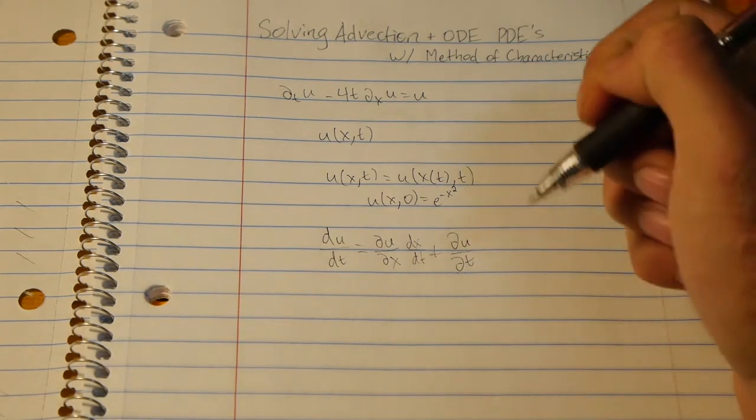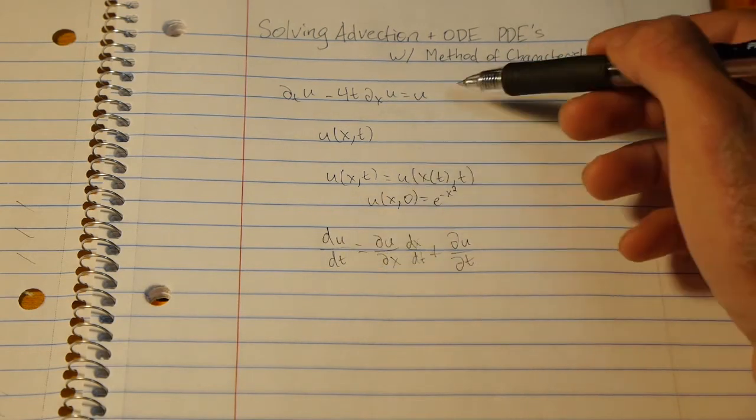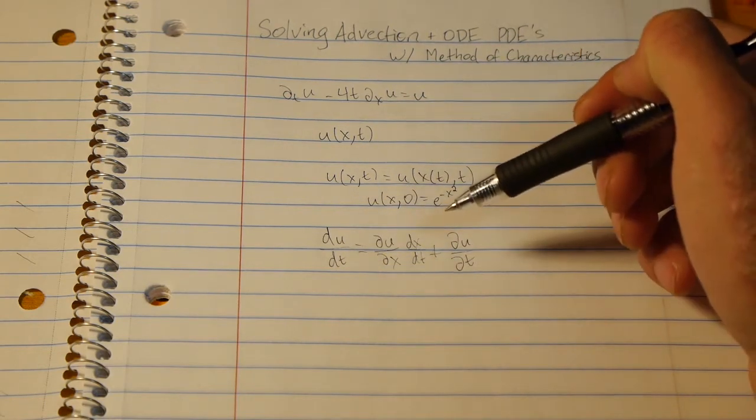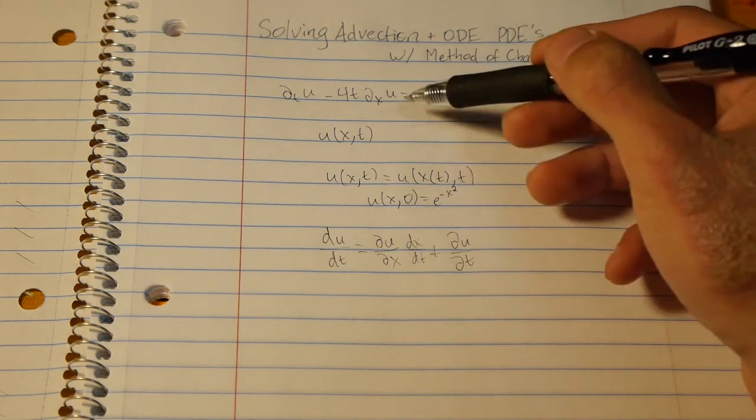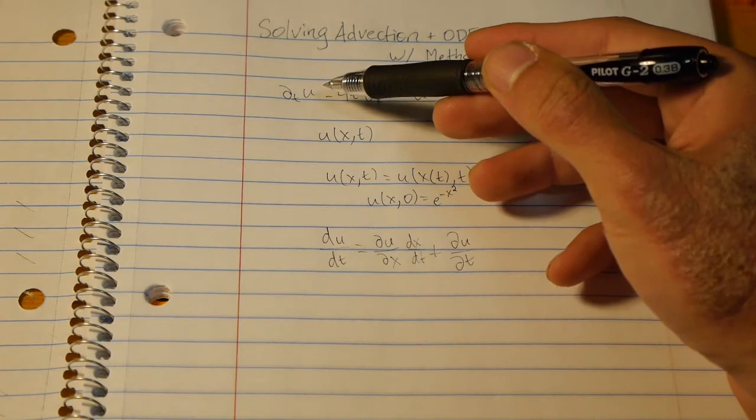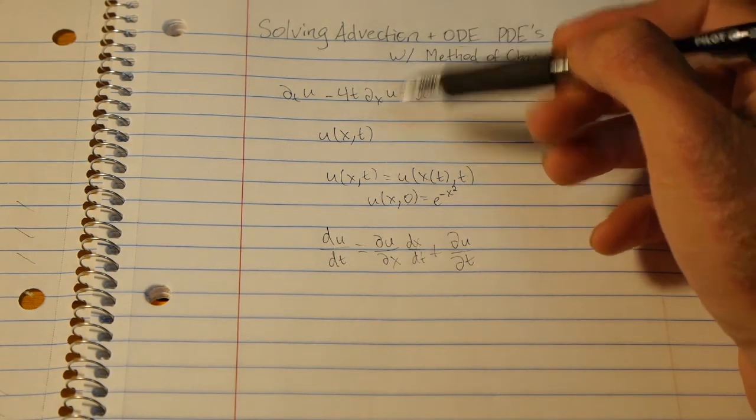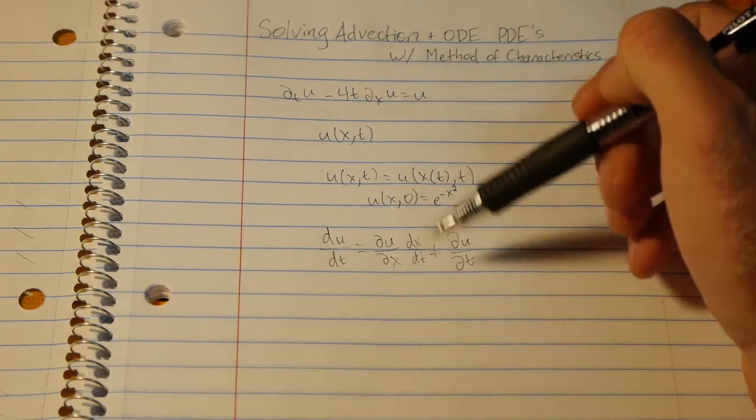And from here we can see that we can sort of line things up. So we have the du/dt here, we have ∂u/∂x with ∂u/∂x and ∂u/∂t with ∂u/∂t. So what we want to do is just connect the things that aren't equivalent and basically plug them in.